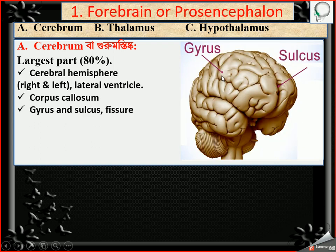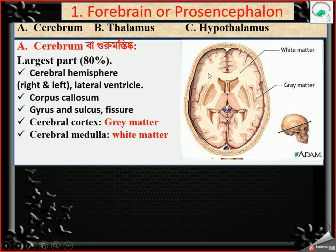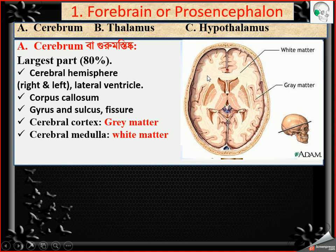The upper ridged part of the brain is called gyrus, and the lower groove is called sulcus. In some places, the deeper sulcus is called a fissure. The outer portion of the cerebrum is called the cerebral cortex, which is made of grey matter. Grey matter is made by neurons, neuroglial cells, and synapses. The inner side is white matter, made by white-colored myelin fibers, which give it the white color.